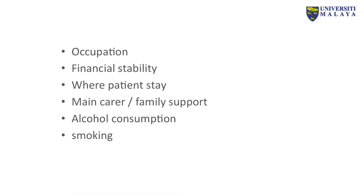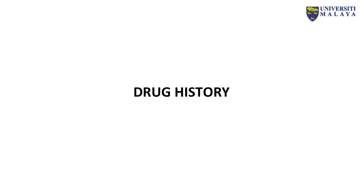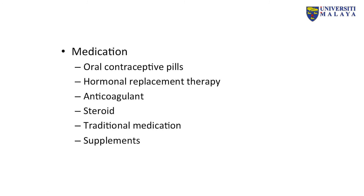Social history. We will enquire about the occupation, financial stability, where the patient stays, who is the main caregiver, and the level of family support. Any history of alcohol consumption and smoking. Drug history: is the patient currently on any medication, for example oral contraceptive pills, hormonal replacement therapy, anticoagulants, steroids, traditional medication, and supplements.